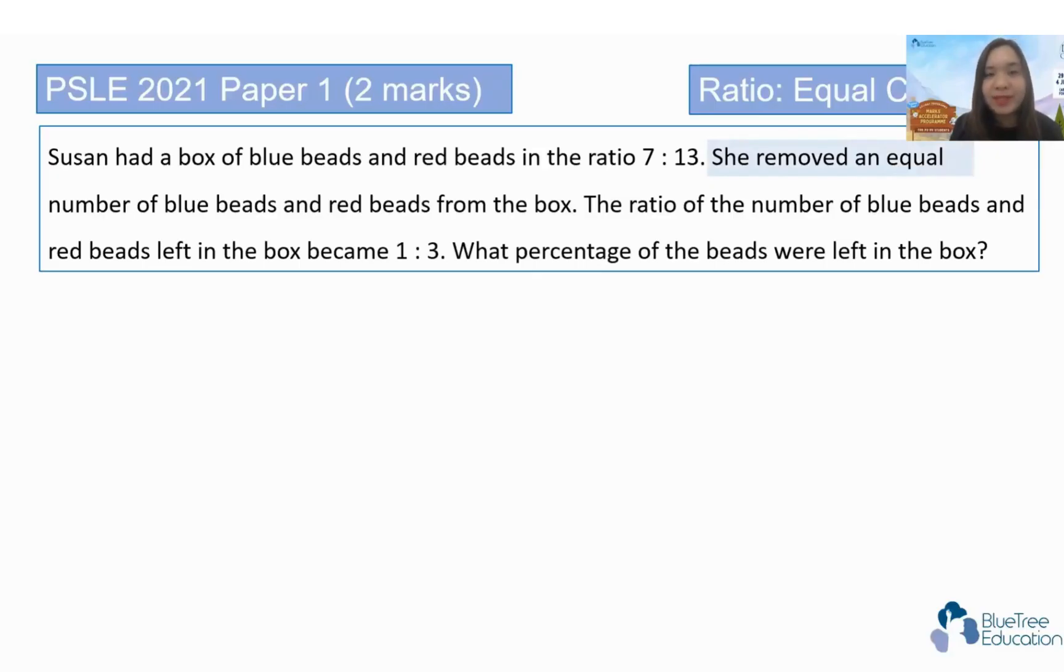Now, Susan had a box of blue beads and red beads in the ratio of 7 is to 13. She removed an equal number of blue beads and red beads from the box. The ratio of the number of blue beads and red beads left in the box became 1 is to 3. What percentage of the beads were left in the box?